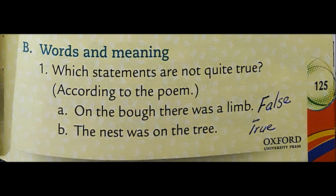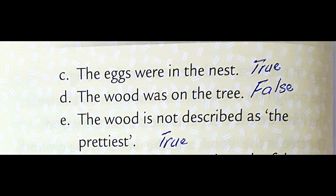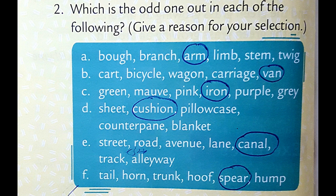B: Words and Meaning. Question 1: Which statements are not quite true according to the poem? A: On the bone there was a limb - False. B: The nest was on the tree - True. C: The eggs were in the nest - True. D: The wood was on the tree - False. E: The wood is not described as the prettiest - True.